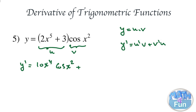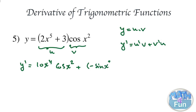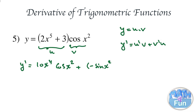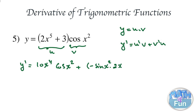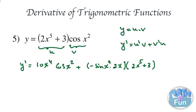Now we add v prime times u. The derivative of cosine x squared — derivative of cosine is minus sine, keeping x squared as the angle. Don't forget to multiply by the derivative of the inside of the cosine, which is x squared, giving times 2x. Then multiply by u, which is 2x to the power 5 plus 3.